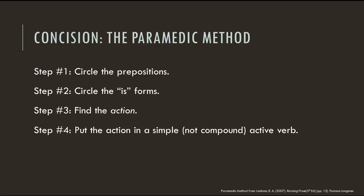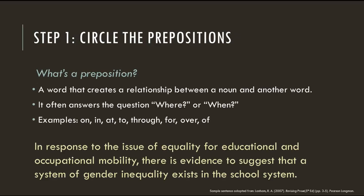In his book Revising Prose, Richard Lanham also teaches a technique for eliminating wordiness called the paramedic method. I'm going to go over the first four steps of that method with you today. Step one is to circle the prepositions. Step two is to circle the is-forms. Next, find the action, and then put the action into a simple, active verb. The goal of the method is to condense prepositional and verb phrases by building sentences around simple, active verbs. The first step in the process is to circle the prepositions — that is, words that create relationships between a noun and another word.